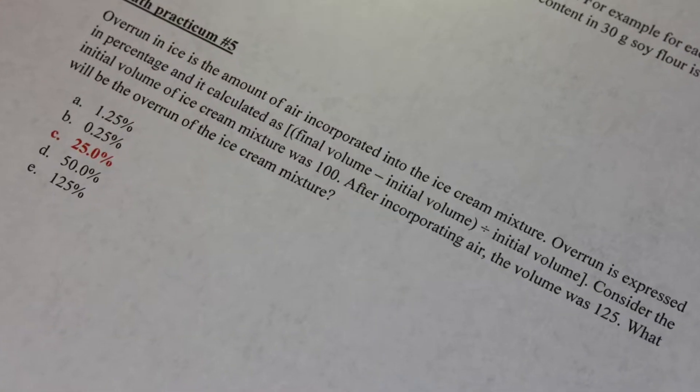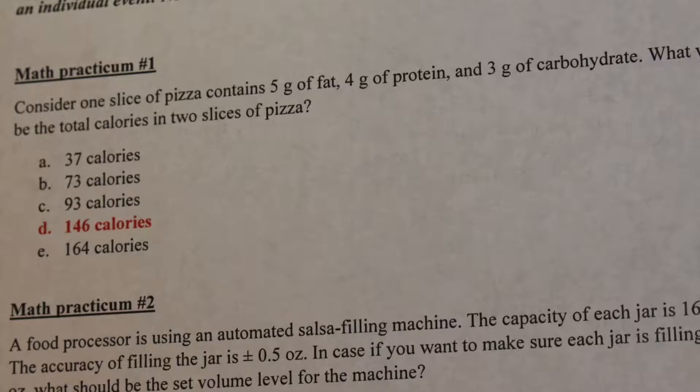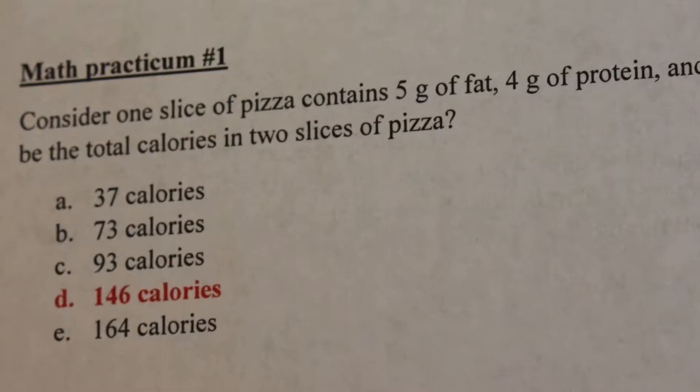For problem solving, students will be asked to solve math problems that relate to food science. For example, they could be asked to calculate the overrun of an ice cream mixture or the amount of calories found in a slice of pizza. If asked to calculate overrun, they'd be given the pertinent information and the equation. For calories in a pizza slice, they would need to know the conversion between the weight of a food component and calories — for example, fat is nine calories per gram.